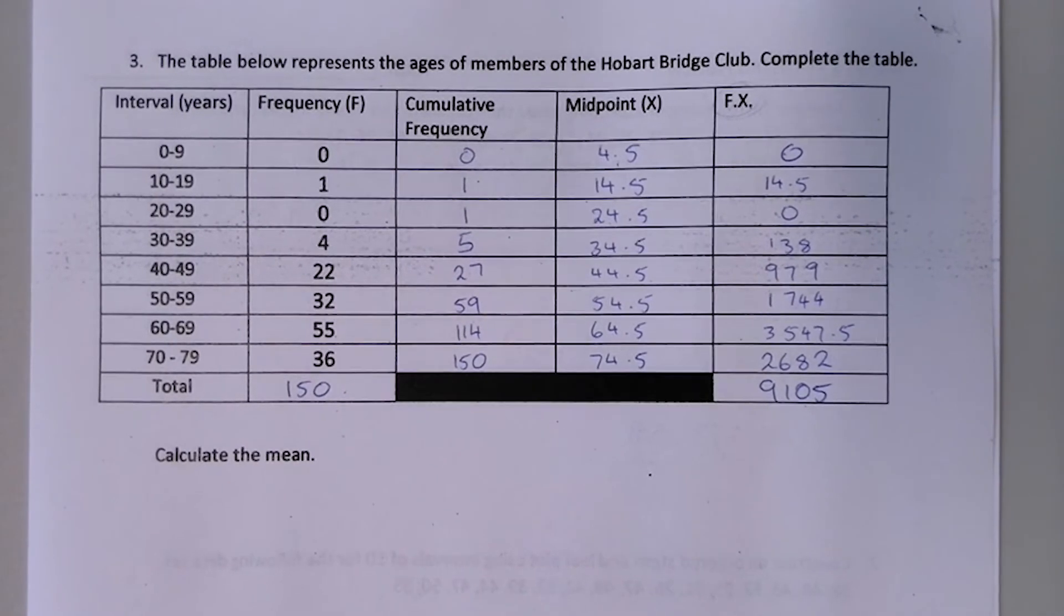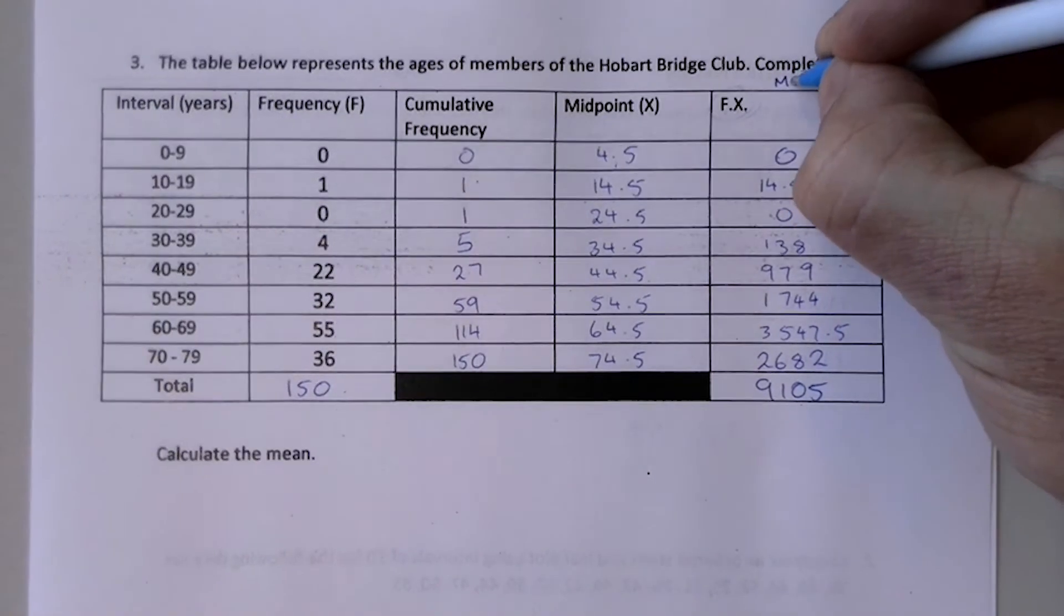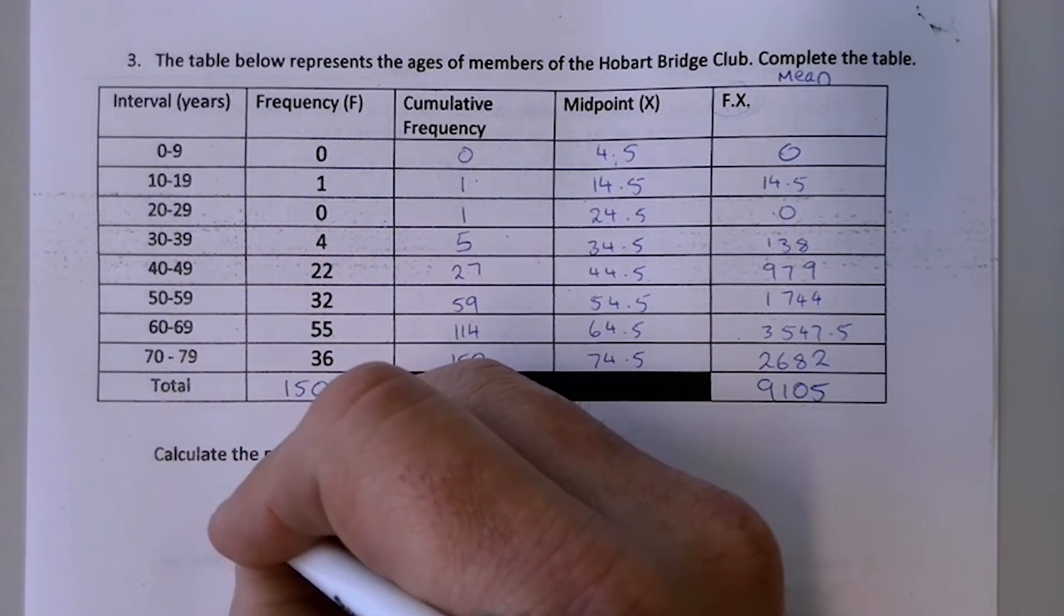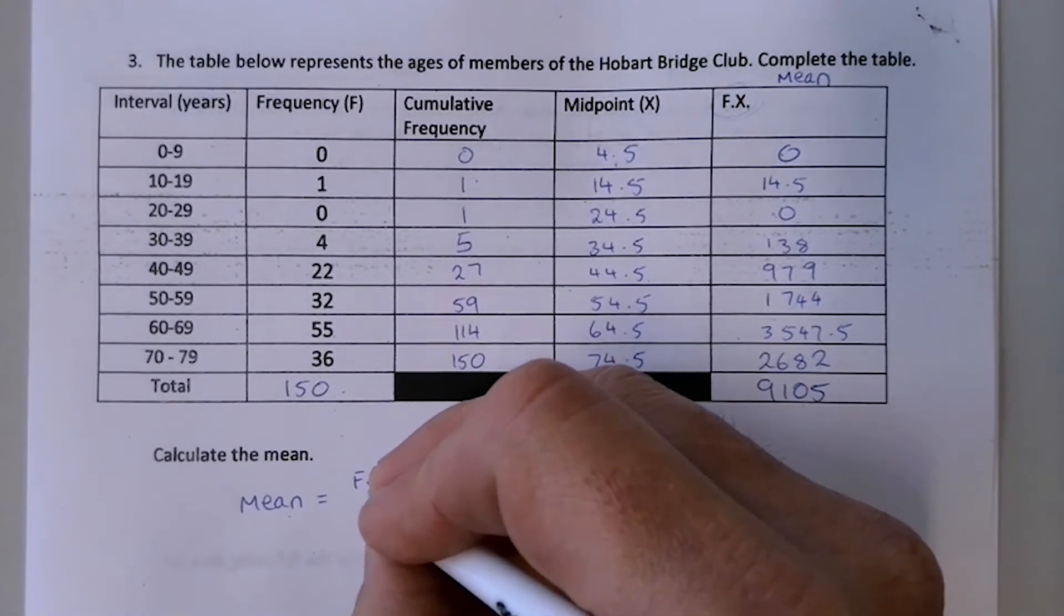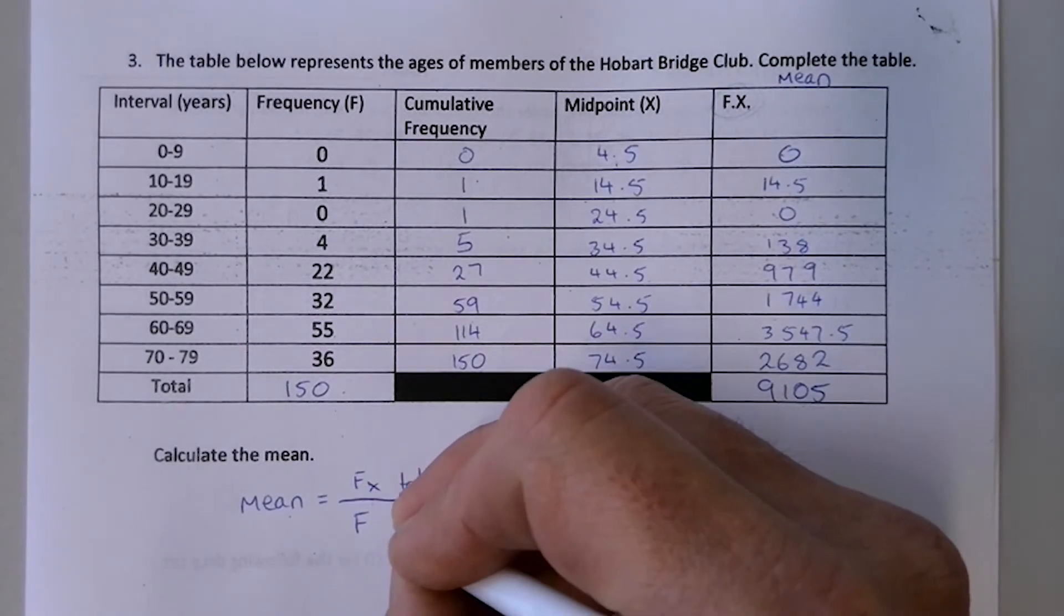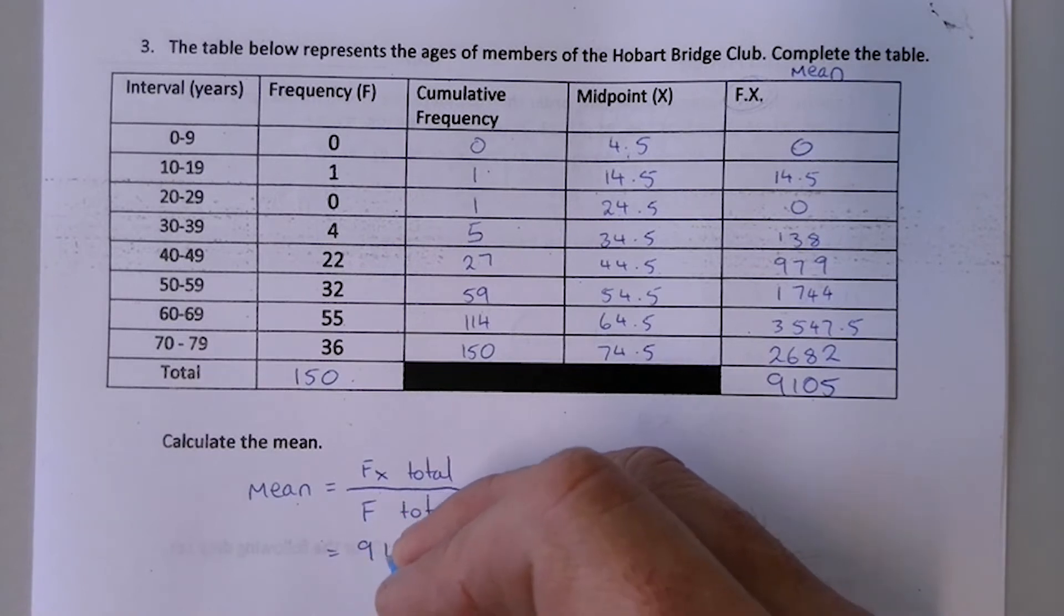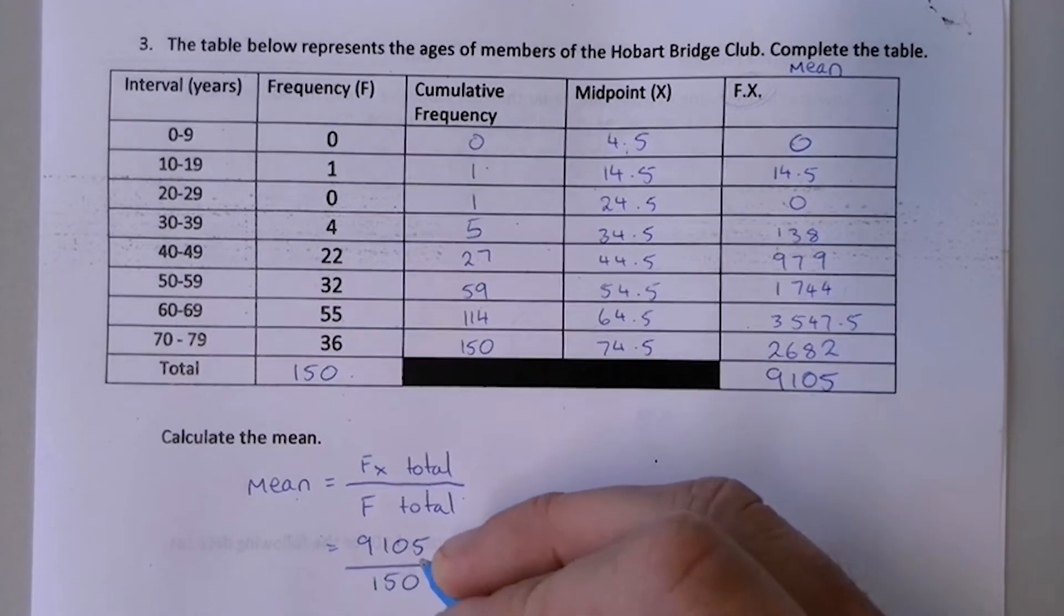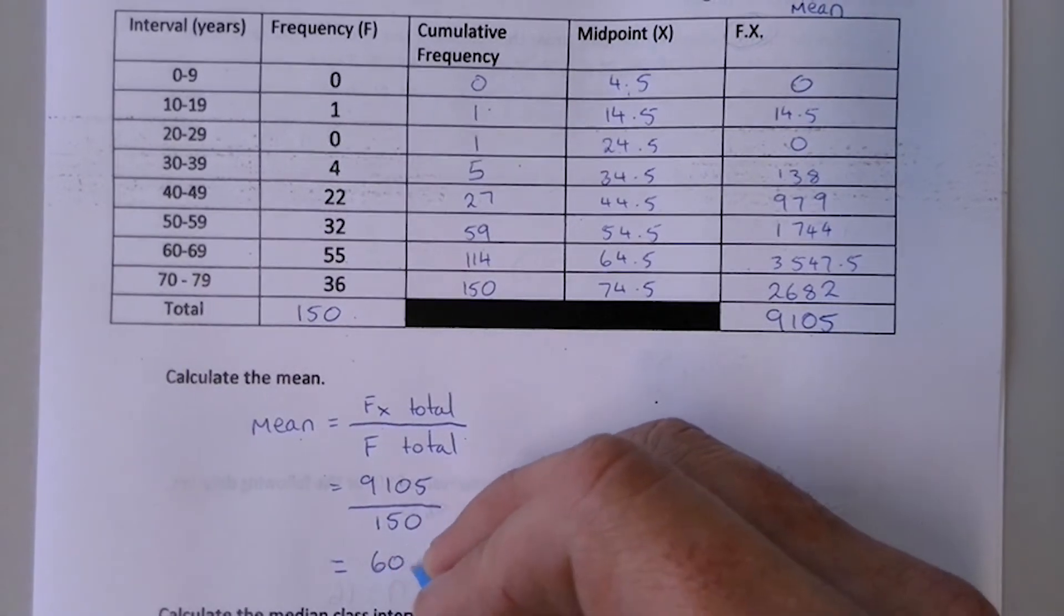The second part of this question is to find the mean. Now, this column here is what's really important for finding out the mean. And you might want to make a note of that so that you can use it in future tables. Because the mean, or the average, is the fx total divided by the frequency total. So it will be 9,105 divided by 150. Which, once you put it in your calculator, will give you 60.7.